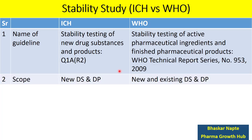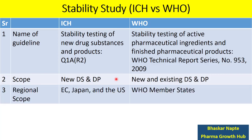What is the scope of ICH Stability Guidelines? It only covers New Drug Substances (DS stands for Drug Substances) and New Drug Products (DP stands for Drug Product). However, WHO considers both new and existing drug substances and drug products. Regarding regional scope, ICH guidelines apply to European countries, Japan, and the US, whereas WHO Stability Guidelines apply to WHO Member States.